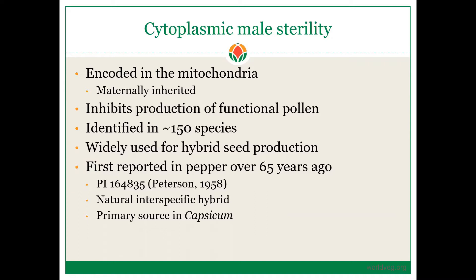CMS was first reported in pepper over 65 years ago from an accession collected in India by Peterson. It was found later to be a natural interspecific hybrid between Capsicum annuum and Capsicum frutescens. There is another way to get CMS in pepper through an interspecific hybridization between Capsicum annuum and Capsicum chinense; however, this frutescens-annuum hybrid is the primary source of CMS in pepper.